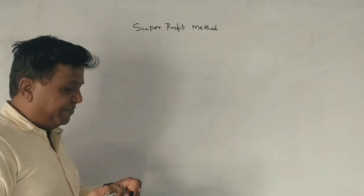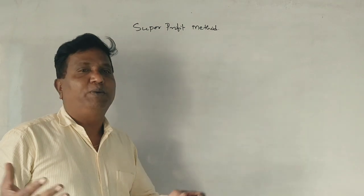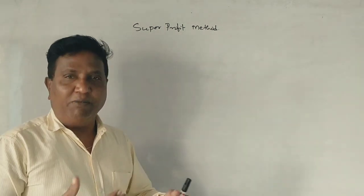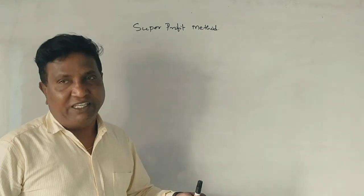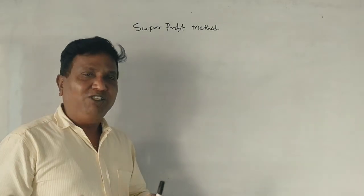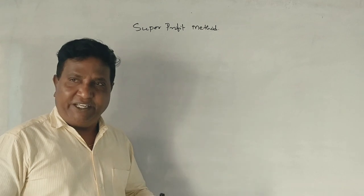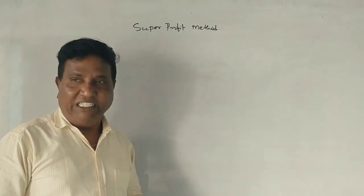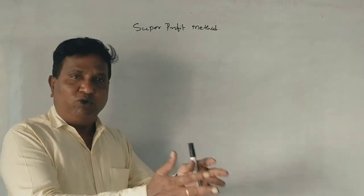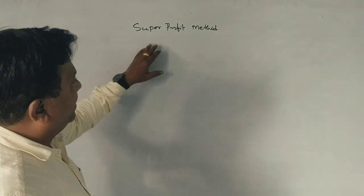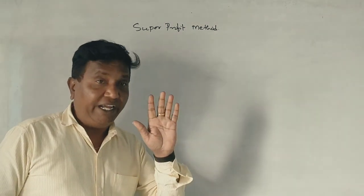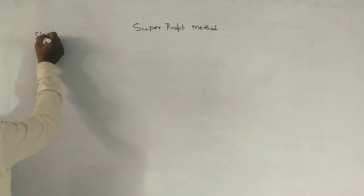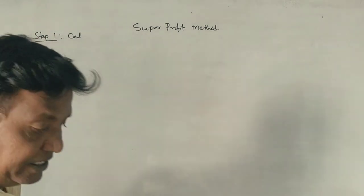If you want to make a simple profit, you can calculate goodwill, but the weighted average method is a super profit method. If you want to make a simple profit method, you can calculate a super profit method. Now, preparation for the super profit method. Step number one: calculation of average profit.